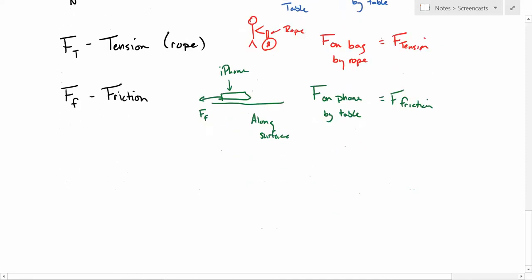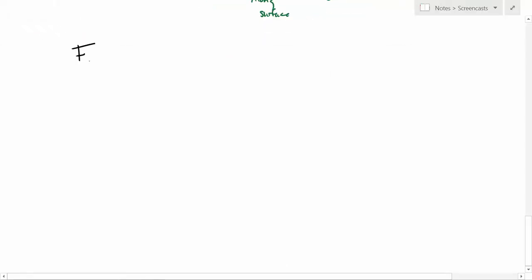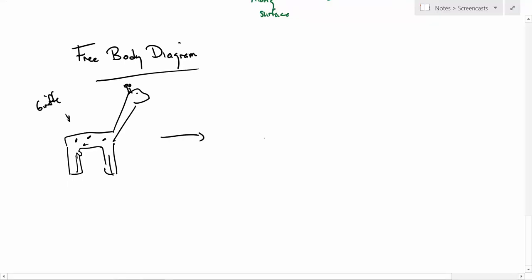Alright. One more thing to talk about and then you're free to go back to your daily lives. When we want to represent forces we're going to use what we call a free body diagram. The idea of a free body diagram is that we take a big thing, like say a giraffe, and we take this giraffe and we're going to just smush it down to a point.